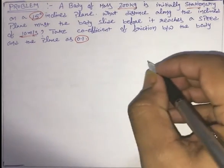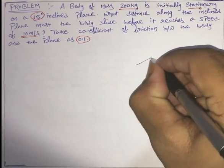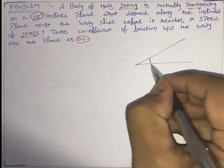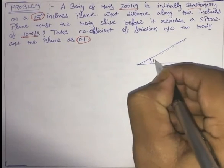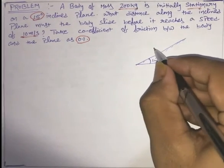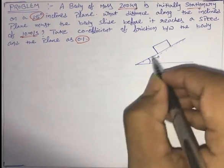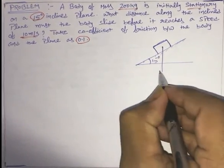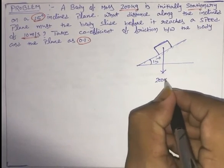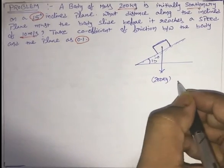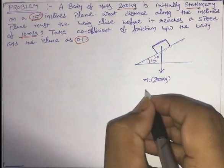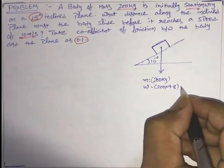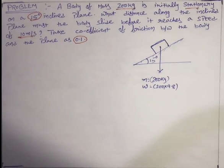First, let us draw the diagram as per the question. This is the inclined plane at an angle of 15 degrees, and here there is a body whose mass is 200 kg. The weight will be 200 into 9.8 Newtons.